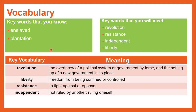A revolution is the overthrow of a political system or government by force and the setting up of a new government in its place. Liberty is freedom from being confined or controlled. Resistance is to fight against or to oppose another. And independent means not ruled by another — something that rules itself.